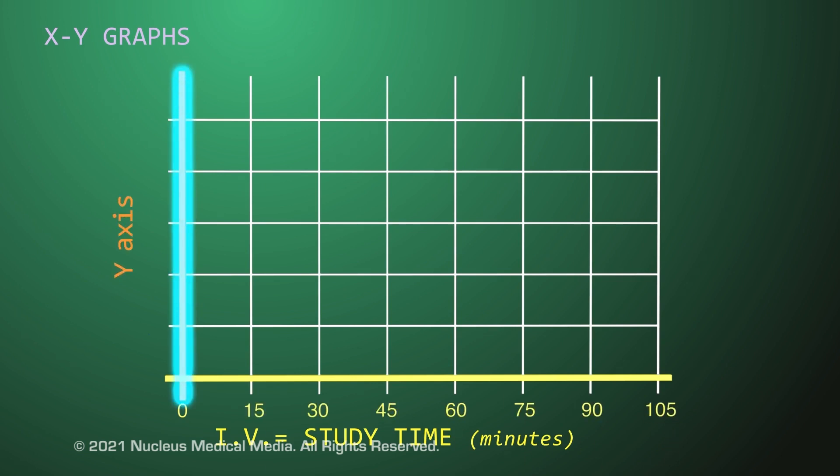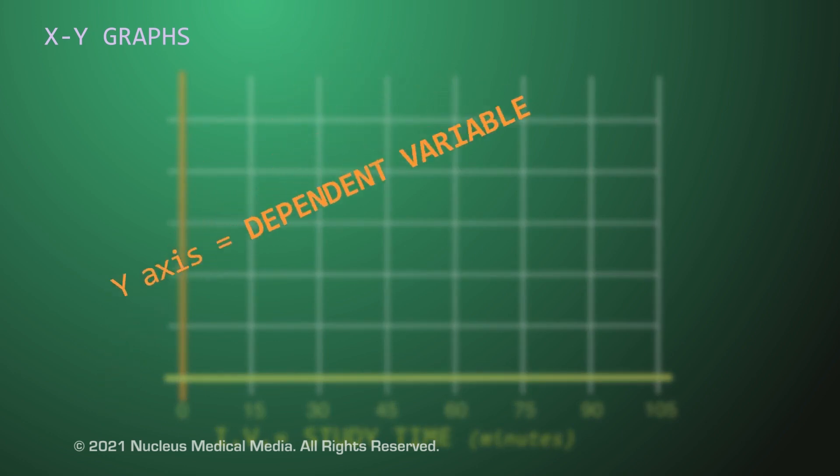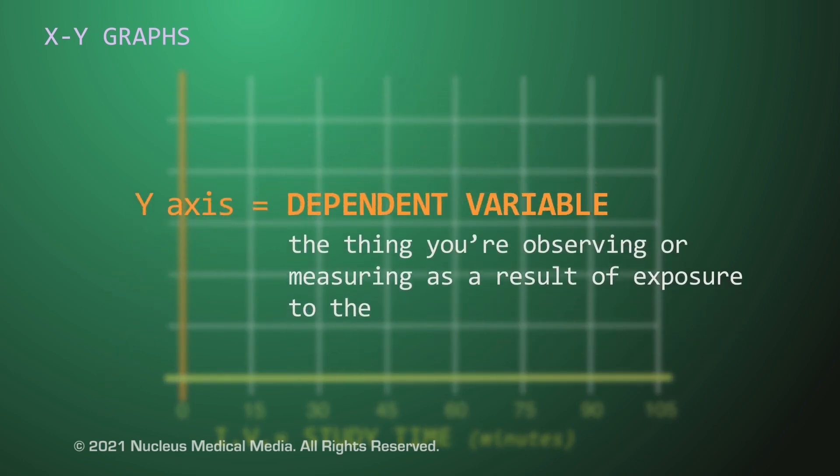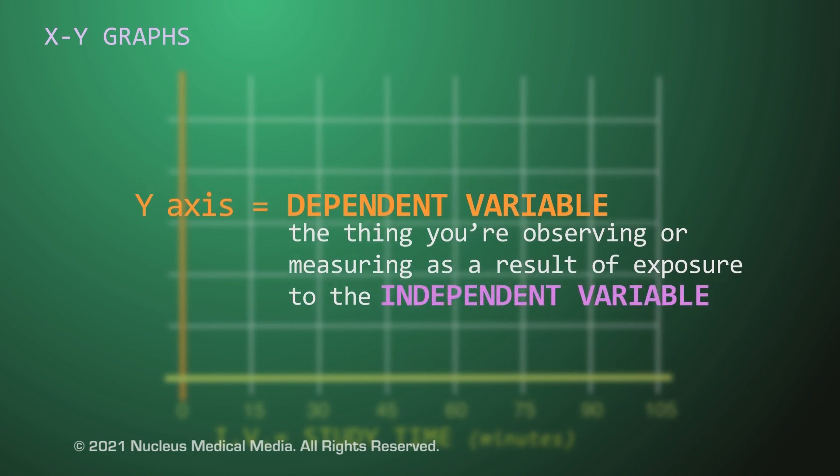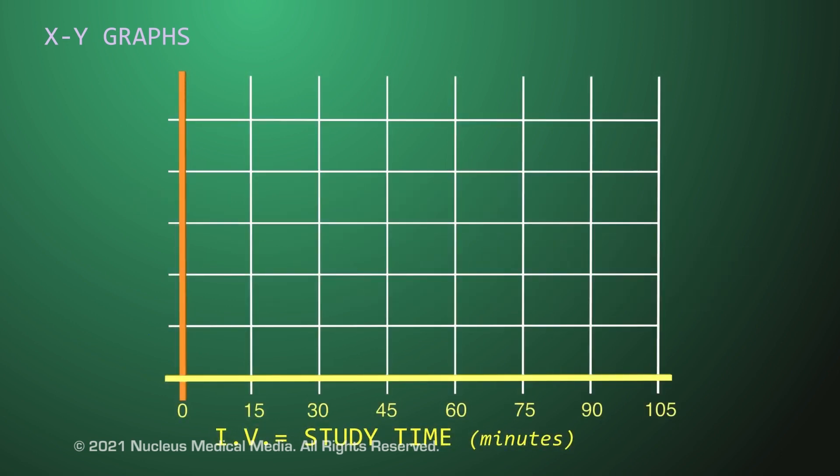The vertical Y axis shows data that represents the dependent variable. You may recall that the dependent variable is the outcome you are observing or measuring as a result of exposure to the independent variable. For example, the dependent variable could be the grade that corresponds with how long a student studied.